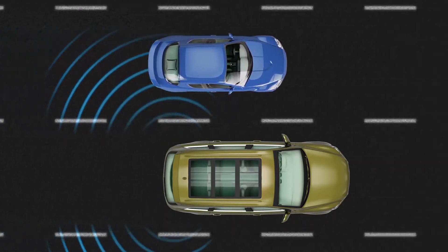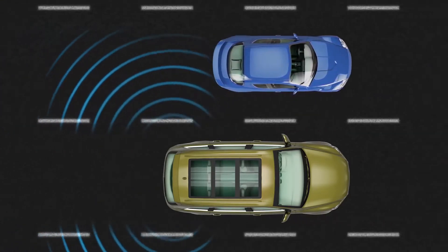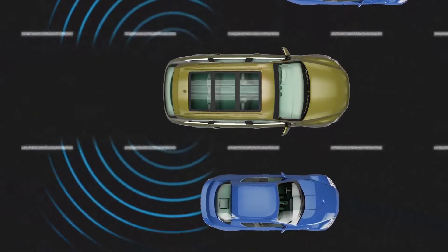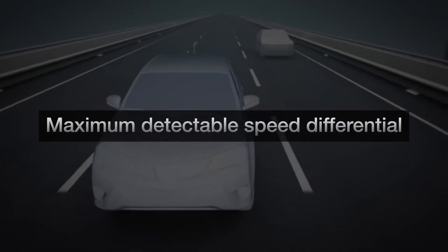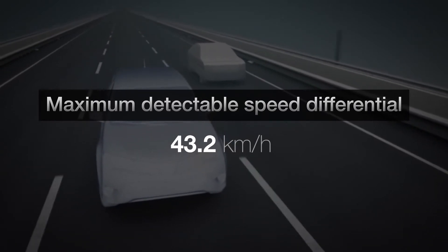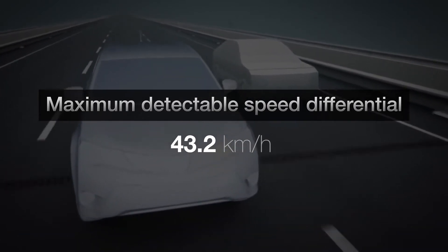The system is designed to help detect vehicles larger than a 125cc motorbike moving at a speed greater than 16 kilometers per hour. The maximum detectable speed differential between the two vehicles is 43.2 kilometers per hour.